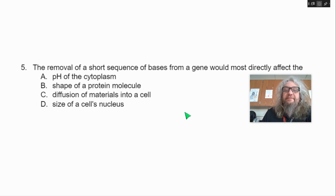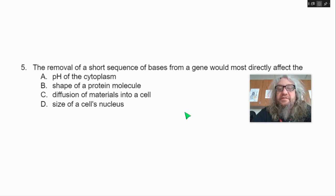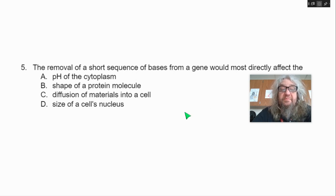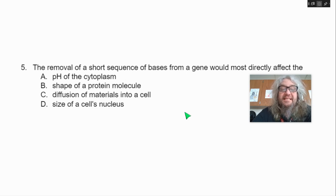Number five. The removal of a short sequence of bases from a gene would most directly affect the — A, pH of the cytoplasm; B, shape of the protein molecule; C, diffusion of materials into a cell; D, the size of the cell's nucleus.